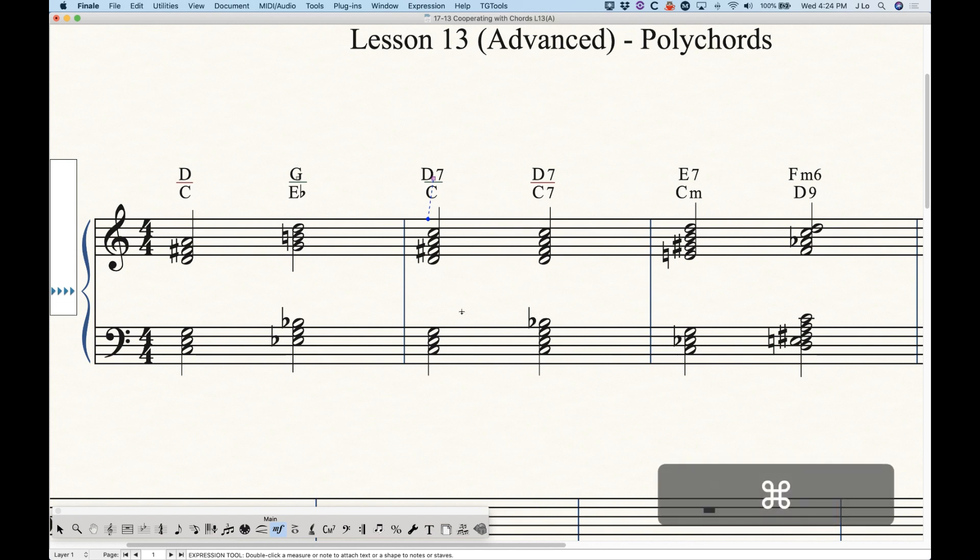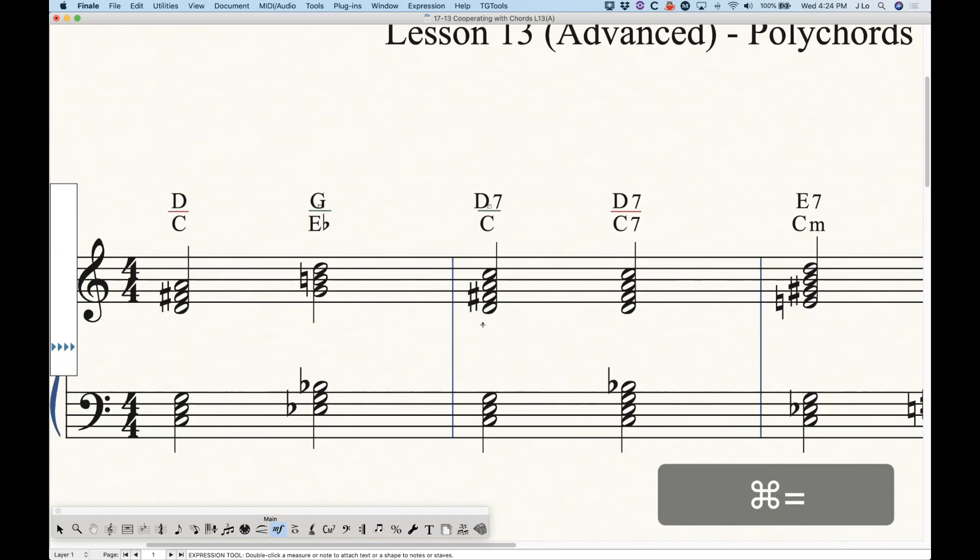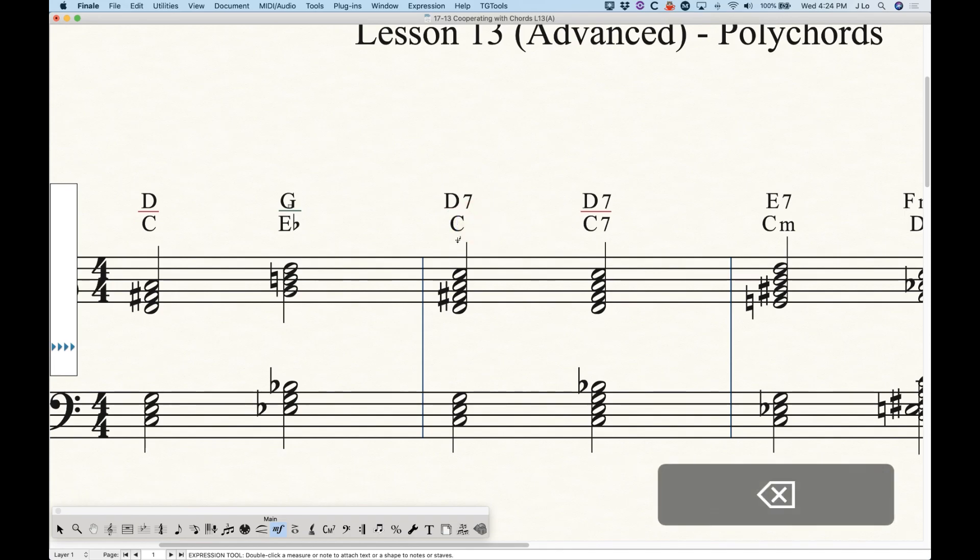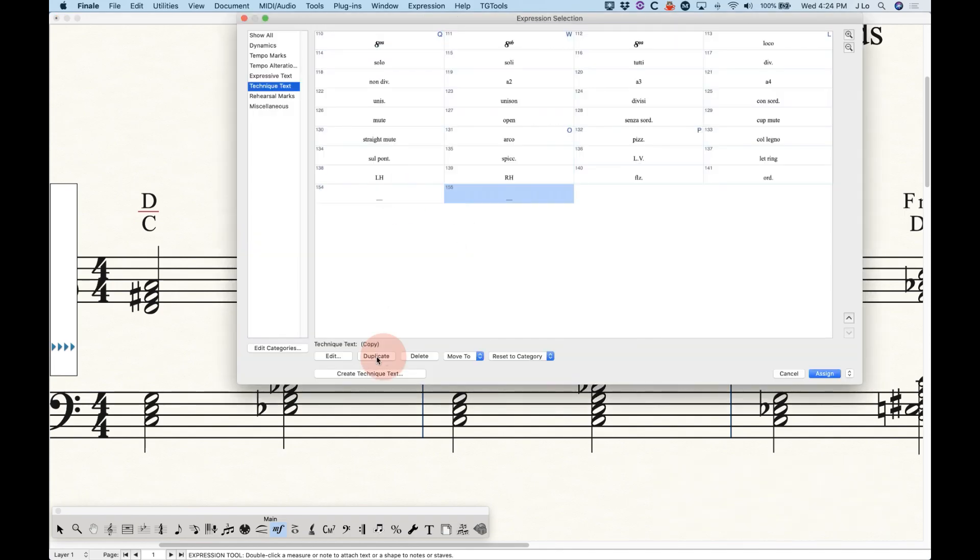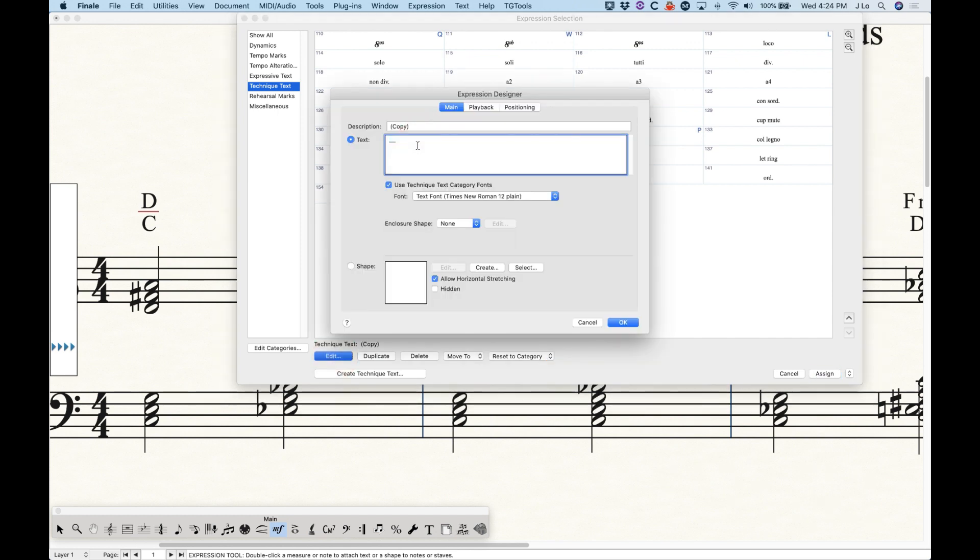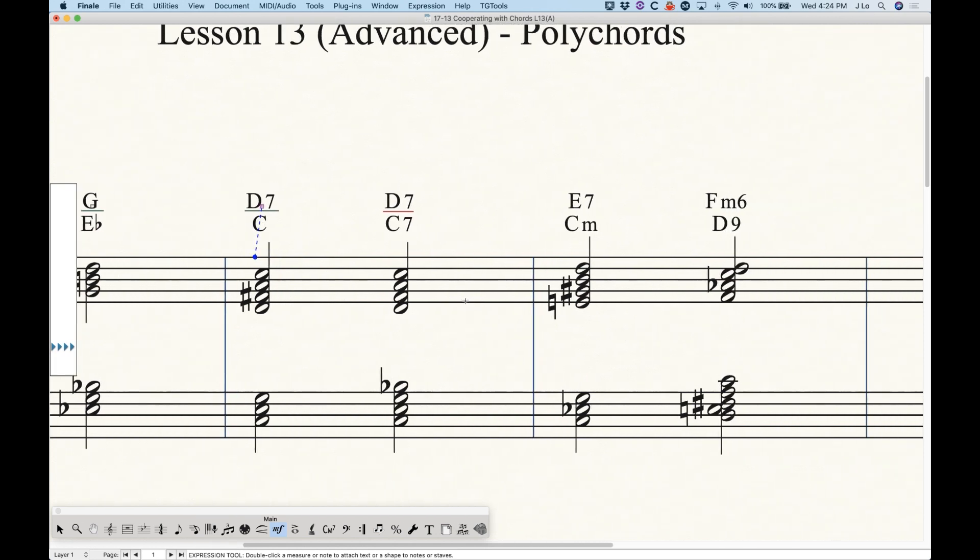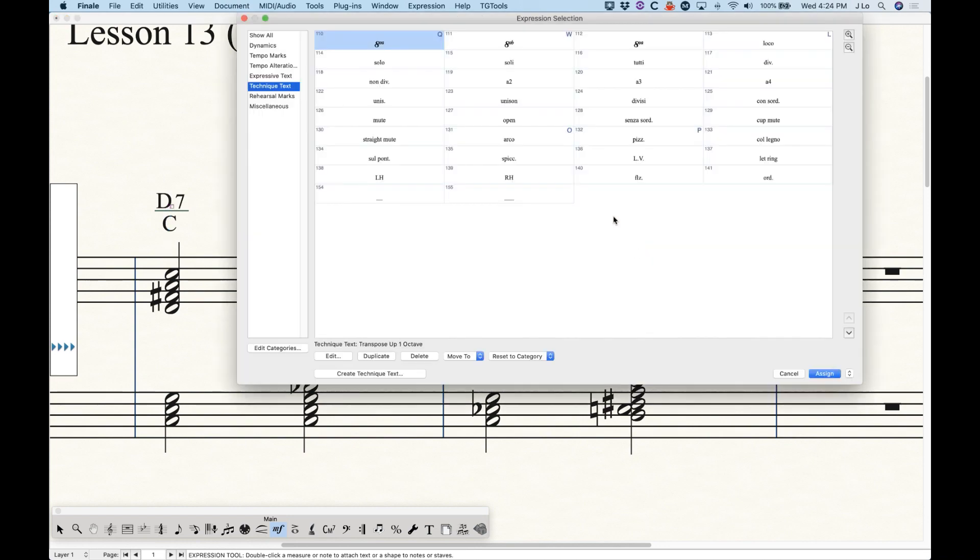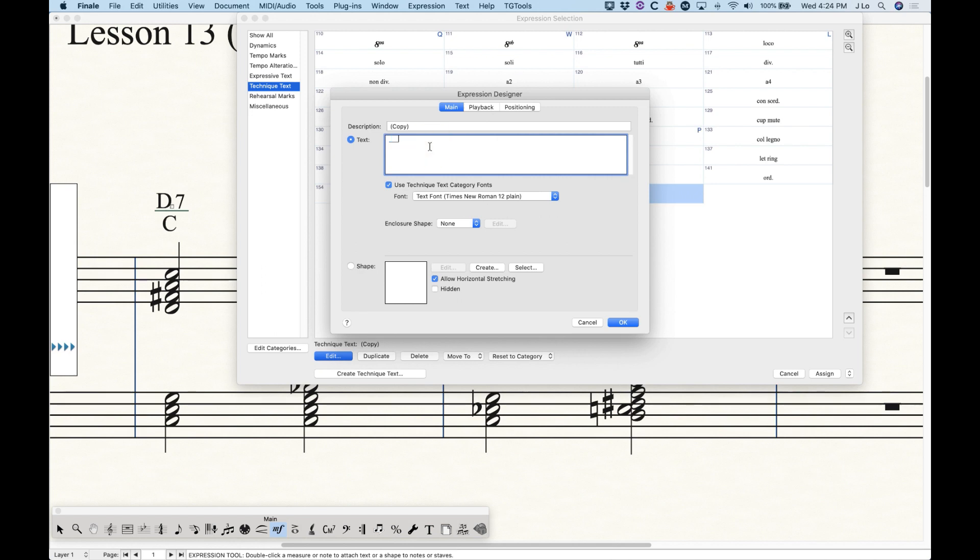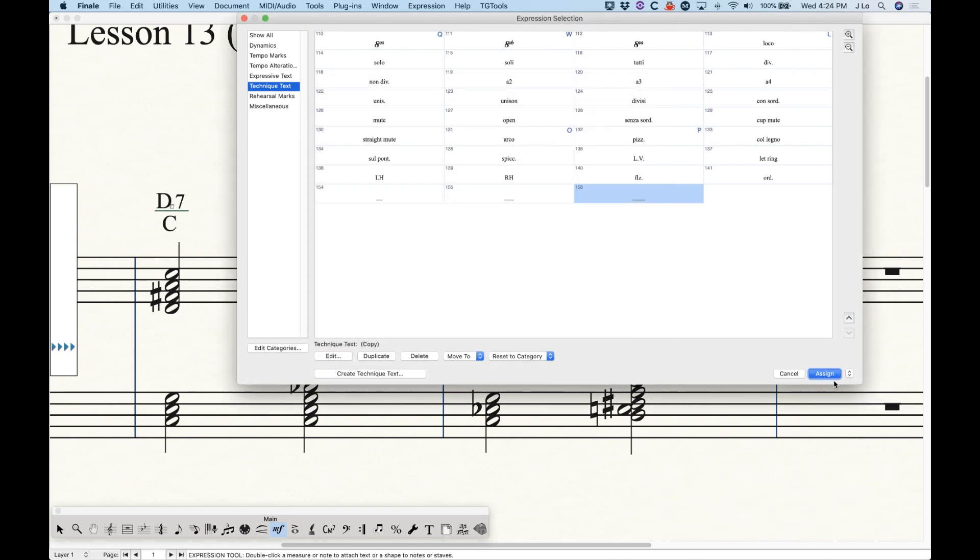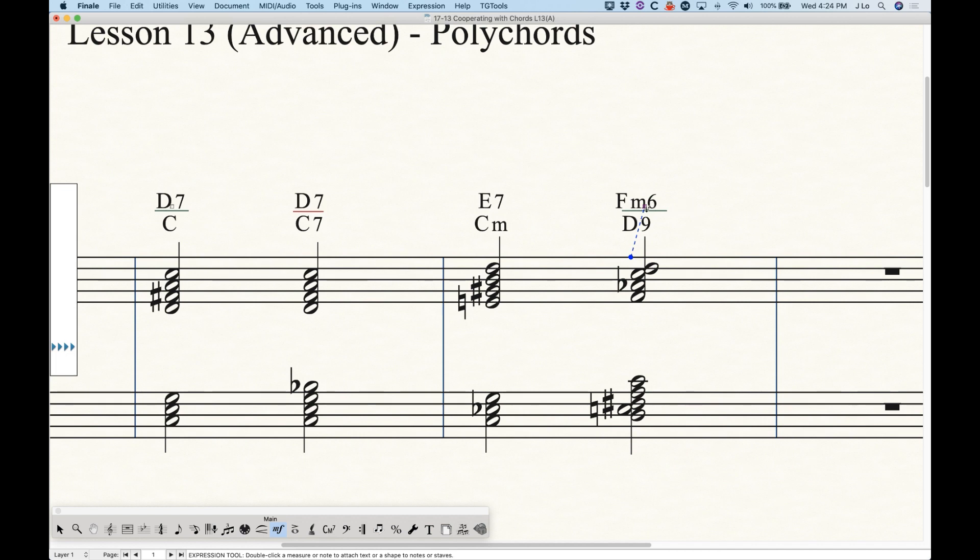Now what you'll notice is that because that's actually two characters, the length of that line is fixed now. So you will actually have to create probably a few of these. So this one is two underscores. So what I can do is just create a secondary one here with three underscores and use that one instead on the D7, that will look a little bit better. And probably on this F minor 6 over D9, we'll probably need a third one with four underscores. And that should probably look OK. And again, with this, sometimes the positioning is not going to be quite right. So you will sometimes have to nudge it a little bit to get it into place.